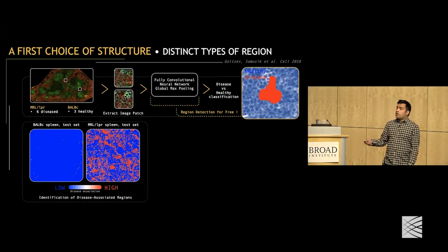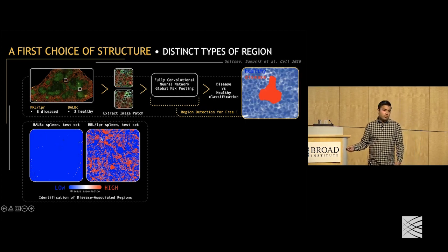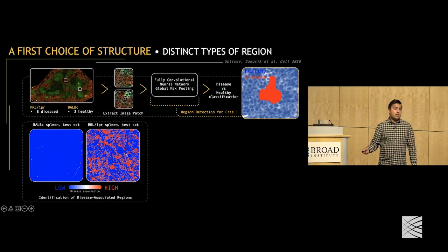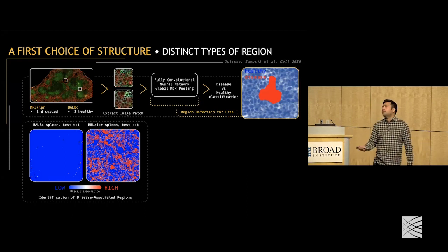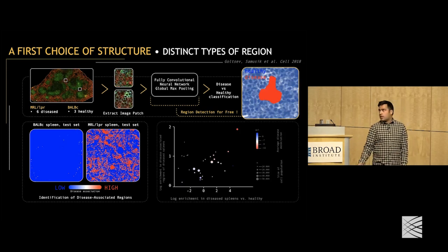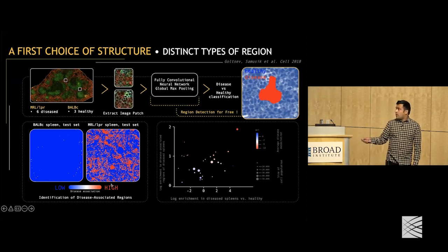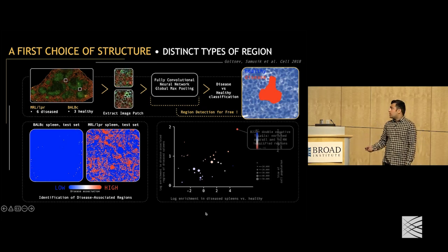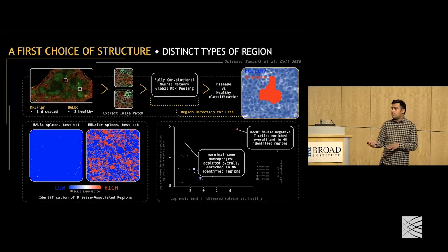When we apply this algorithm to spleens not seen before, in a healthy spleen everything is blue, indicating nothing looks like the diseased state. In diseased spleens, while there are parts that are red, many parts are also blue, indicating large swaths look like healthy tissue. On the x-axis we have enrichment in diseased spleens, on the y-axis enrichment within these regions, with each point corresponding to a cell type. Some cell types are enriched in the diseased state and in the diseased regions, while others are depleted overall from the healthy to diseased state but actually enriched in the disease-specific regions.